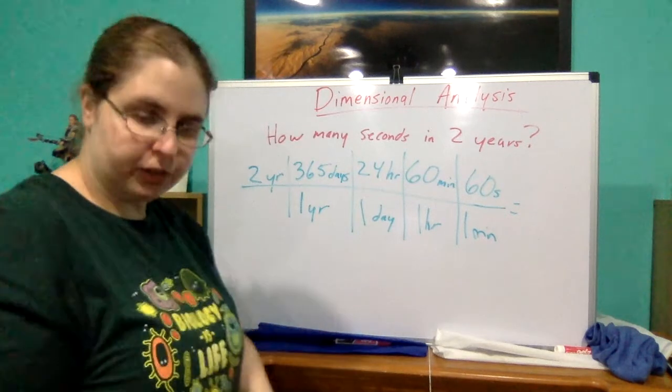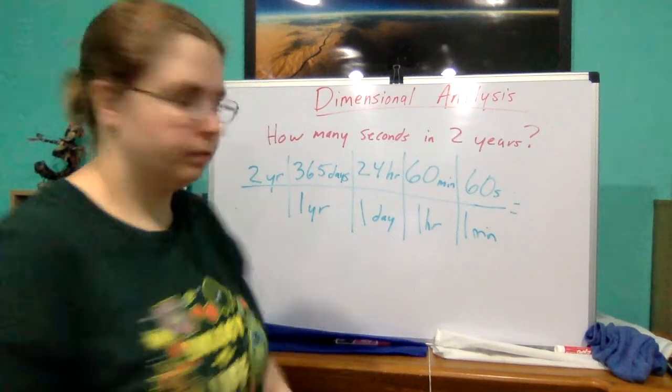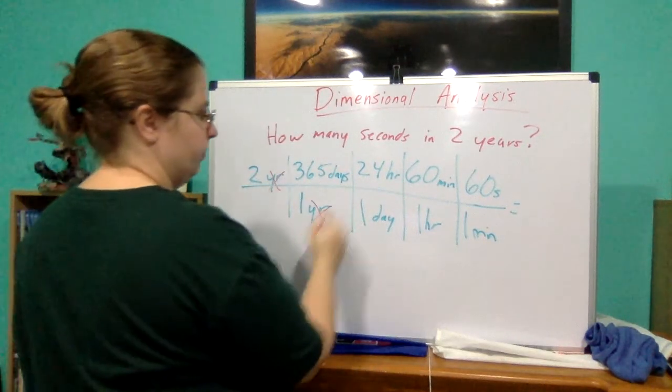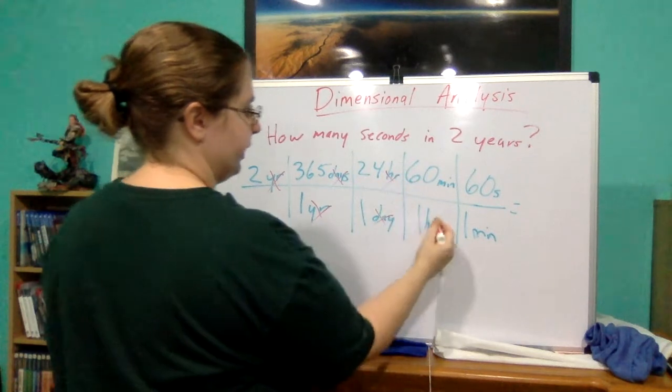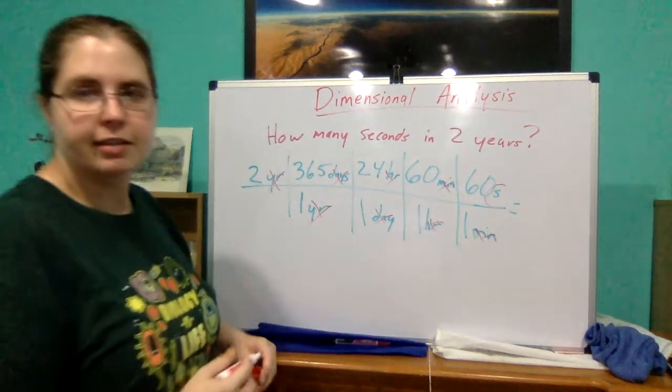Now, let's make sure that all of our units will cancel out. So we have years cancel, days cancel, hour cancels, minutes cancel, and we are left with seconds.